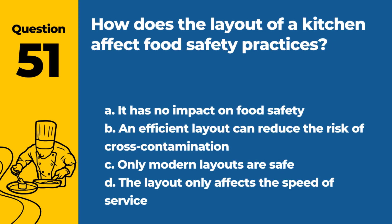Question 51. How does the layout of a kitchen affect food safety practices? A. It has no impact on food safety. B. An efficient layout can reduce the risk of cross-contamination. C. Only modern layouts are safe. D. The layout only affects the speed of service. Answer: B. An efficient layout can reduce the risk of cross-contamination. The layout of a kitchen affects food safety practices, as an efficient layout can help in reducing the risk of cross-contamination and improving overall safety.